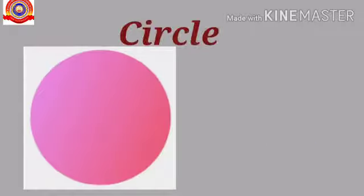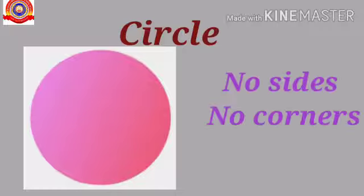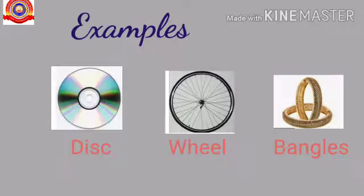Next one: circle. It is a closed curve. It has no sides and corners. Examples of circle: disc, wheel, bangles, etc.